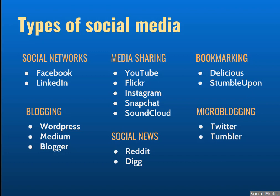Bookmarking sites are services that allow you to save, organize, and manage links to various websites and resources around the internet. Most allow you to tag your links to make them easy to search and share. The most popular are Delicious and StumbleUpon. Social news services allow people to post various news items or links to outside articles, and then it allows users to vote on these items. The voting is the core social aspect — the items that get the most votes are displayed most prominently. The community decides which news items get seen by the most people. The most popular of these are Digg and Reddit.